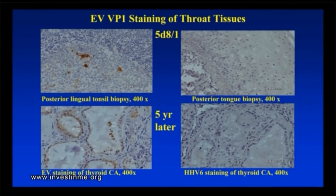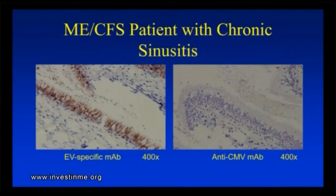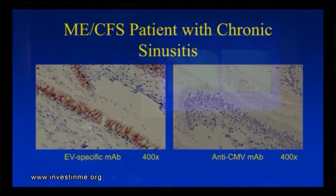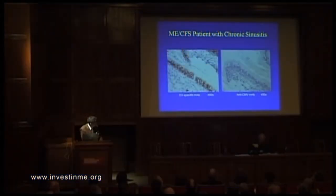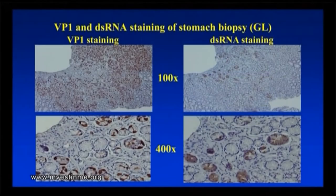We can also see this in other tissues. A patient who complained of persistent throat and tongue pain — we were able to find viral protein in the posterior biopsy of the tongue. Here's a patient who had chronic sinus infection — actually totally healthy, then got sick every month for two years, along with the rest of the symptoms of ME-CFS. She had sinus surgery. We retrieved the sample and we can see viral protein in the sinus lining here.